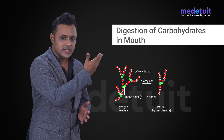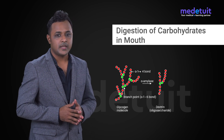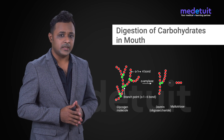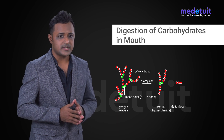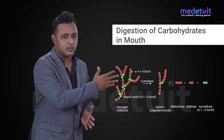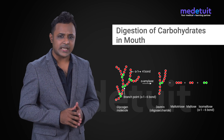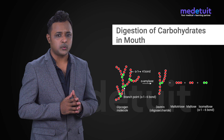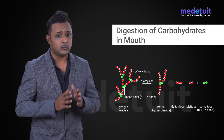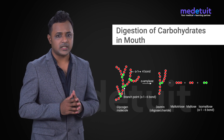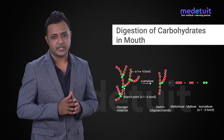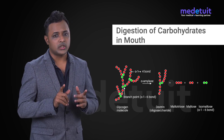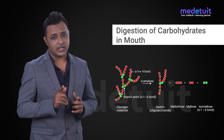These smaller pieces can be an oligosaccharide such as dextrin, a trisaccharide such as maltotriose, or disaccharides such as isomaltose and maltose. Dextrin is an oligosaccharide that can contain up to 8 molecules of glucose connected by alpha 1 to 4 glycosidic bonds, and can also contain one or more alpha 1 to 6 glycosidic bonds.